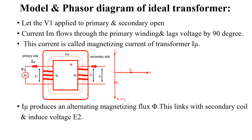Let us see the model and the phasor diagram of an ideal transformer. Here you can see a practical model of an ideal transformer. Let us consider that alternating current is applied to the primary side of the transformer and the secondary is kept open.